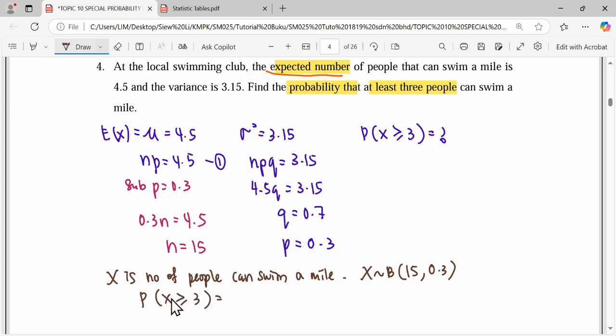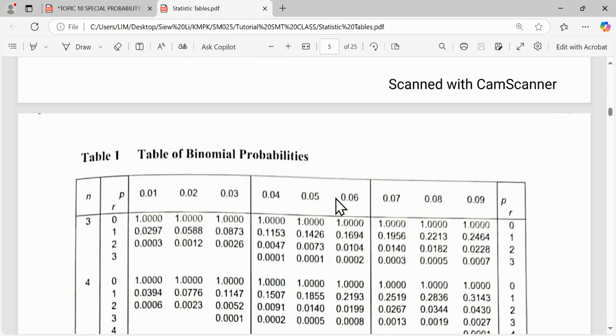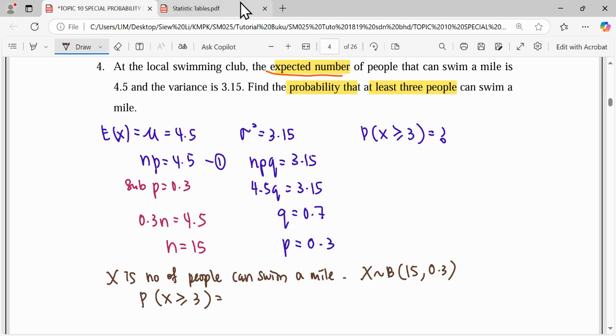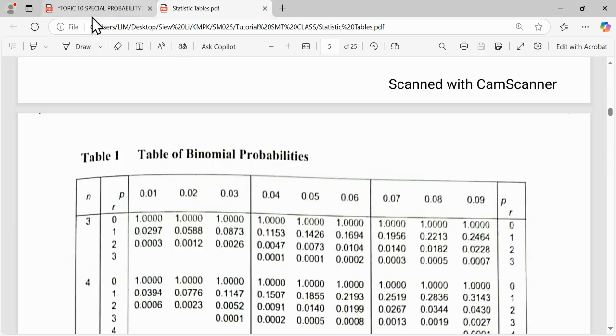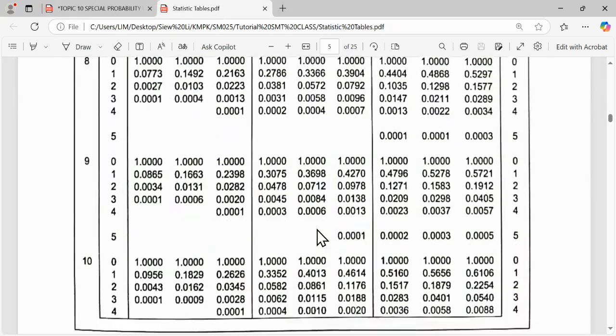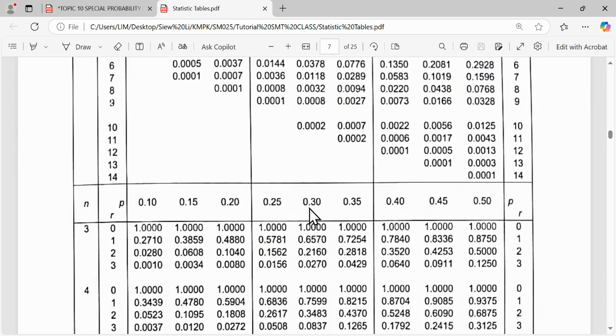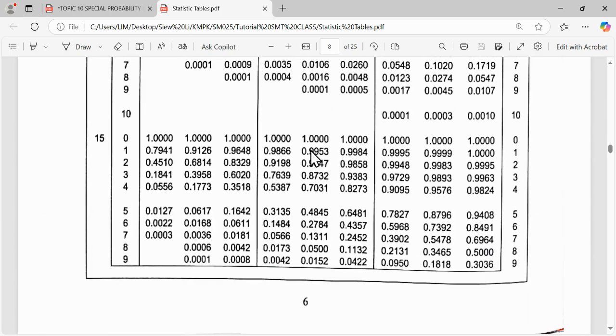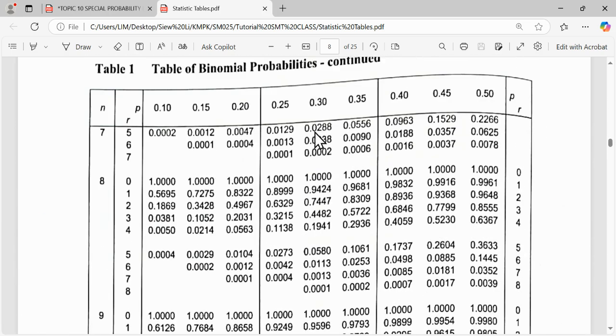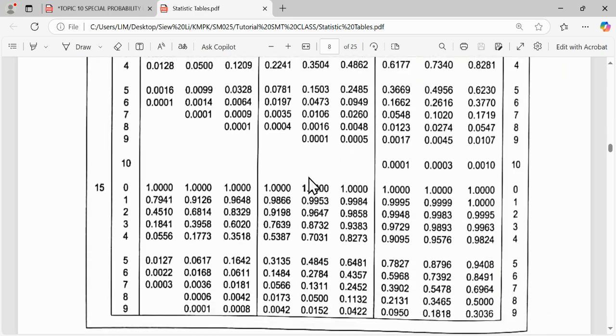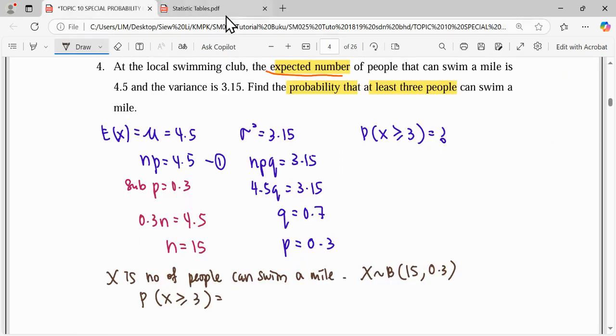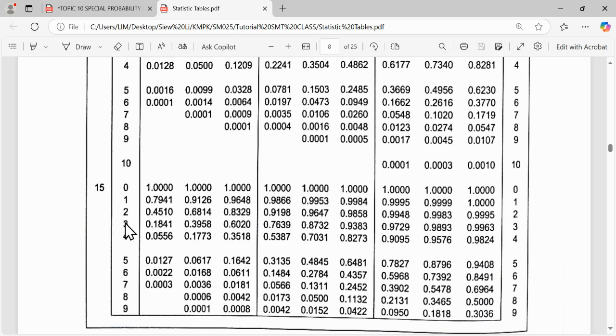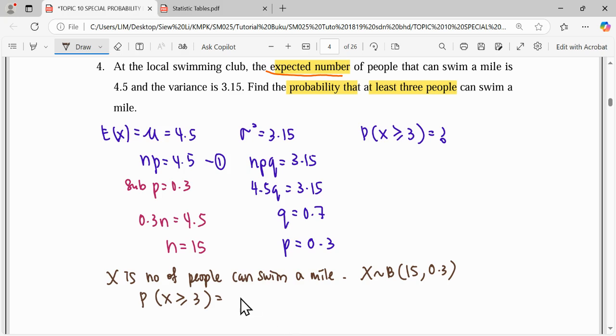To answer this question for P(X ≥ 3), more than or equal, we can read from the table directly. So choose our statistic table for binomial, n is 15, p is 0.3. We're going to read the reading of 3 or more than equal, which is 0.8732.